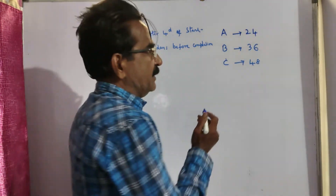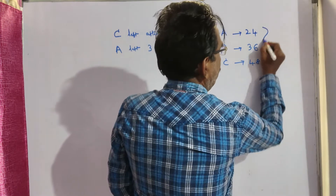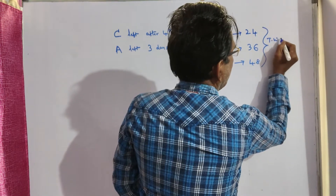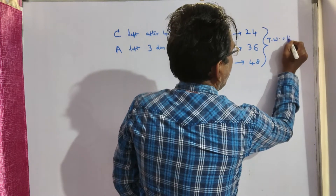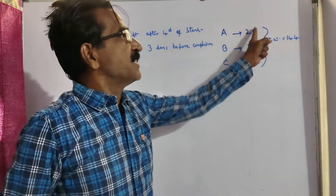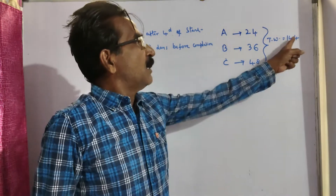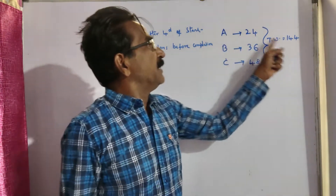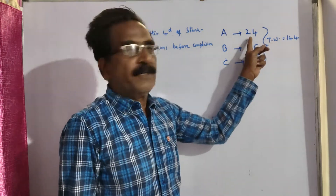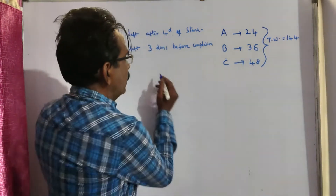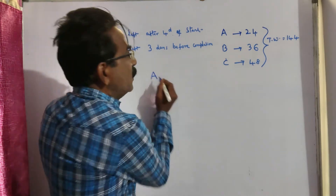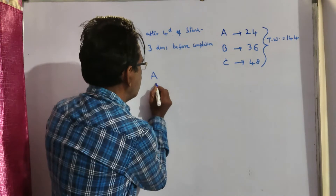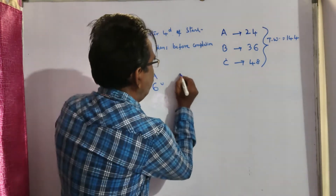Let us find the total work. The total work is the LCM of these 3 numbers. Total work is equal to 144 units — that is the LCM of 24, 36, and 48. A can complete this 144 units of work in 24 days, so A can do 6 units of work per day.